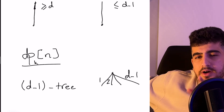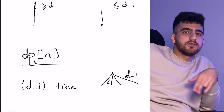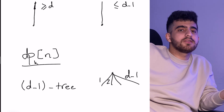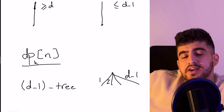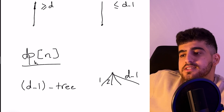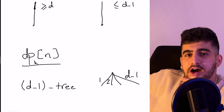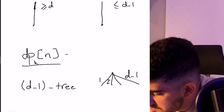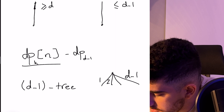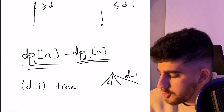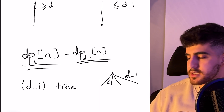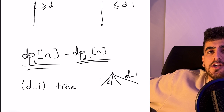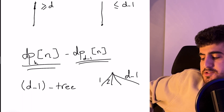If in this (D-1)-tree I calculate the number of paths whose weights sum to exactly N, these are all the bad paths — all the paths where every edge has weight at most D-1, so none of them has weight at least D. I can simply calculate all the bad paths and subtract them. So the answer is dp_k[n] minus dp_{d-1}[n]. These are just two arrays: dp1 is on the K-tree, dp2 is on the (D-1)-tree. I just calculate both and subtract.